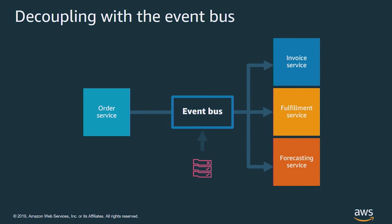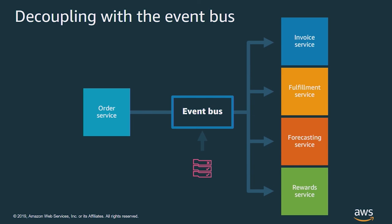Back in our example with an event bus decoupling the architecture, it looks similar. But now if the fulfillment service has an error, it simply raises an error event. This is caught by other services that are listening and can take action accordingly. And in the other problem example, where a reward service is added — for another team to consume some order service events, they simply add a new rule to the bus. There's no need to wait on the order service team to make an update. Now service teams can act much more independently and move faster.